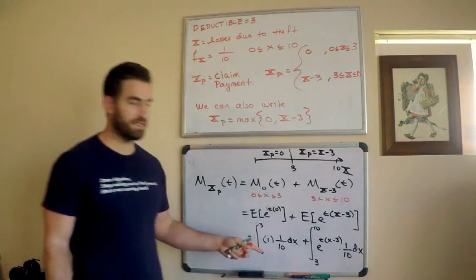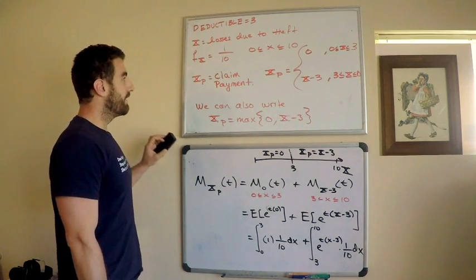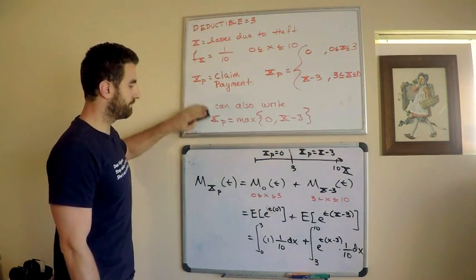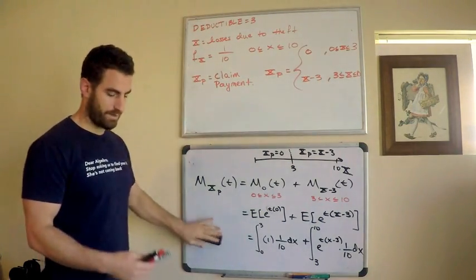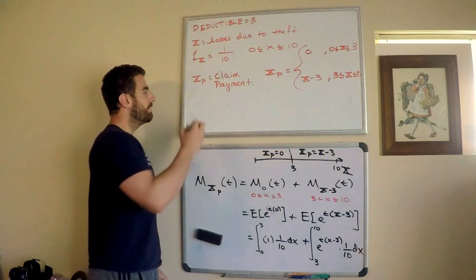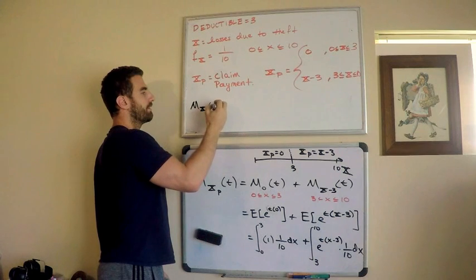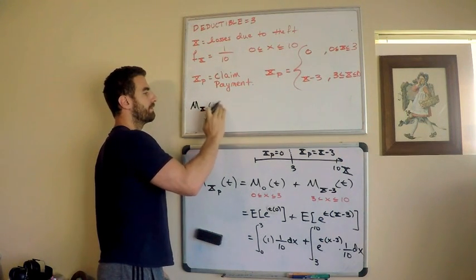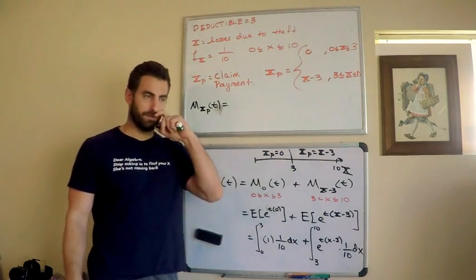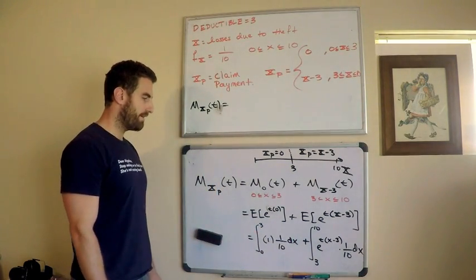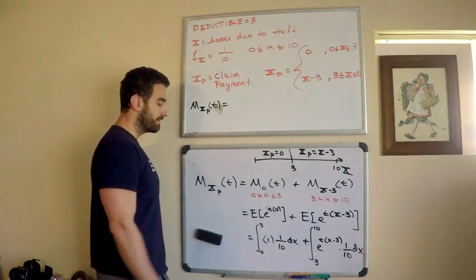This is actually zero to three of, this is one, so one, times the density function one tenth. And I'm integrating actually with respect to x plus, using the definition here, this is the integral from three to ten of e to the t times x minus three times one tenth dx. This is what I need to compute and then I'm done. So, really not too bad once you understand the logic up to this point. So, let me just come up here and we can finish this.